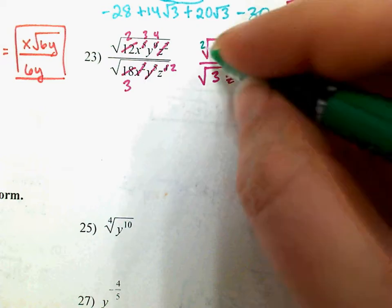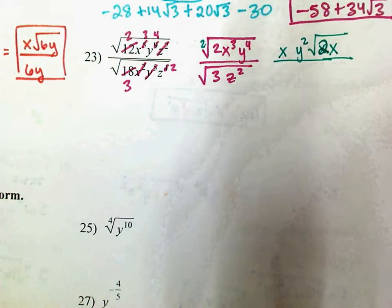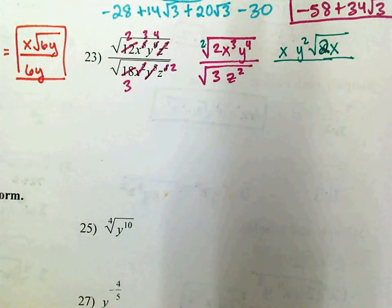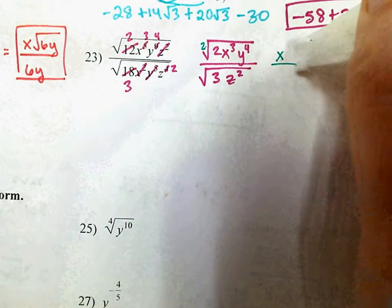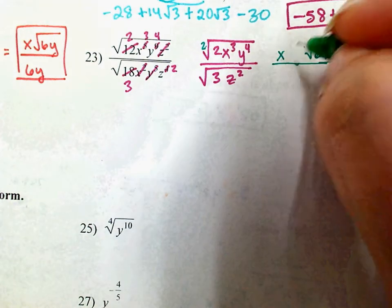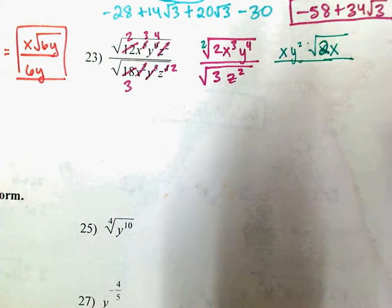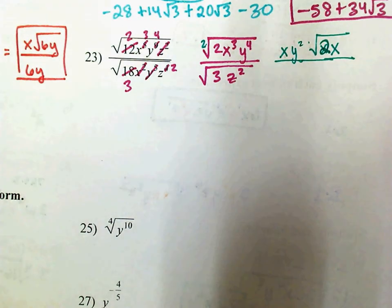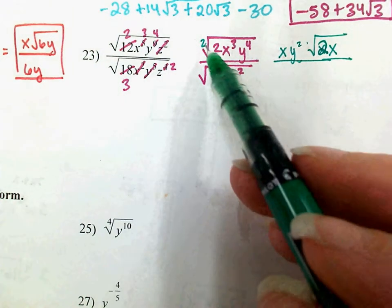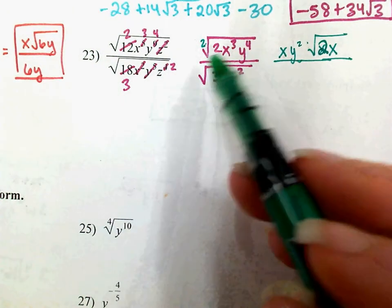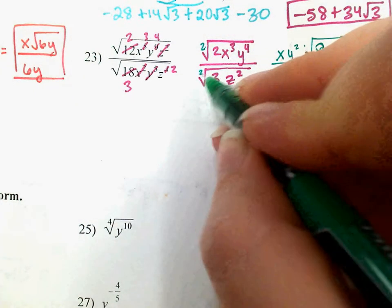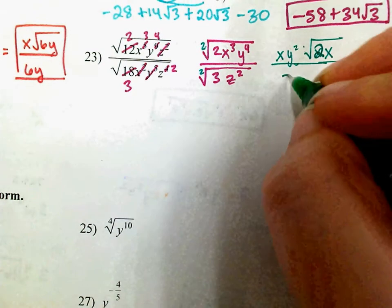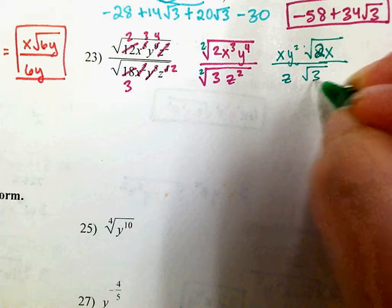The square root — 2 goes into 4 twice. So I've got x, y squared. That's part of the root. So I've got x, y squared, then times the square root of 2x, because 2 goes into 3 one time with 1 left over, and 2 goes into 4 twice. In the denominator, 2 goes into 2 one time, so I've got a z on the exterior with just the square root of 3 left inside.